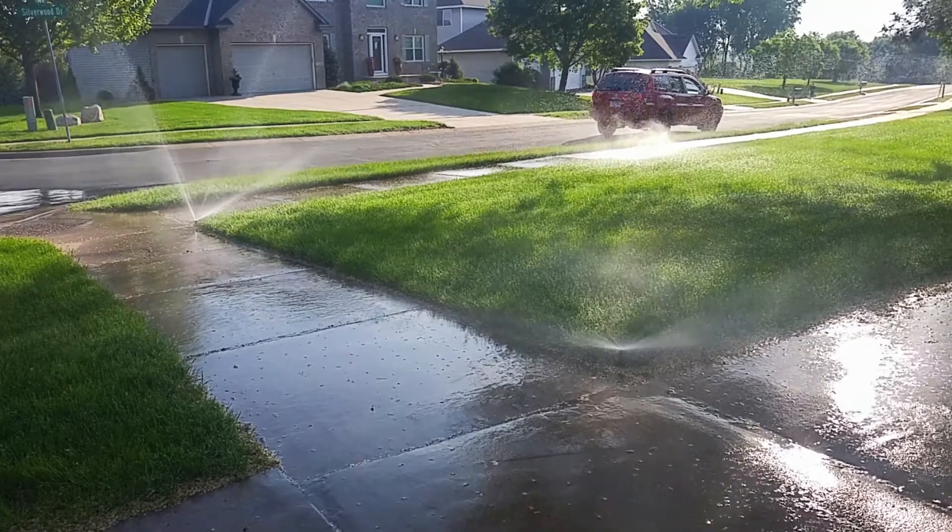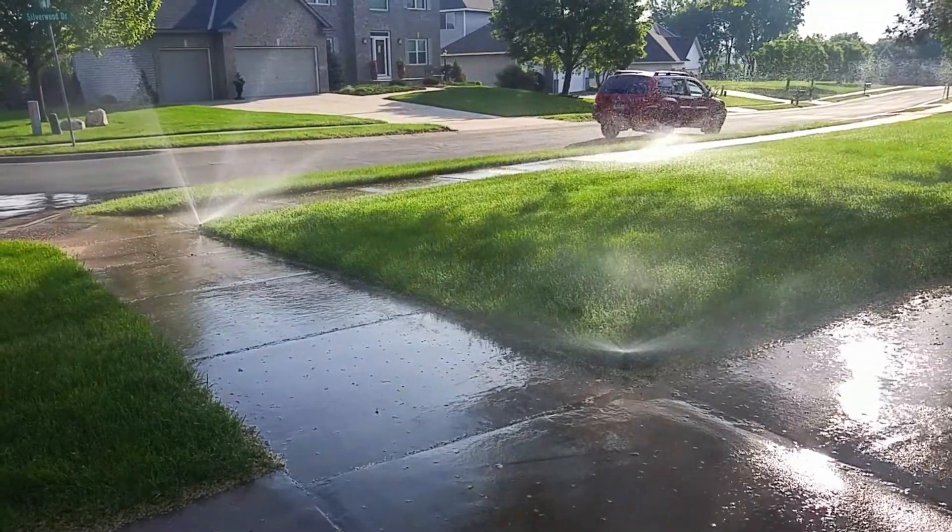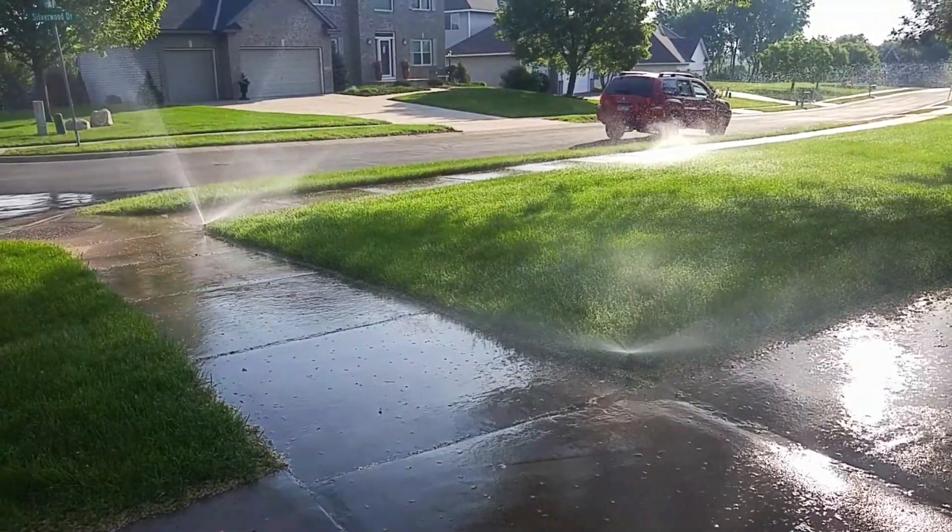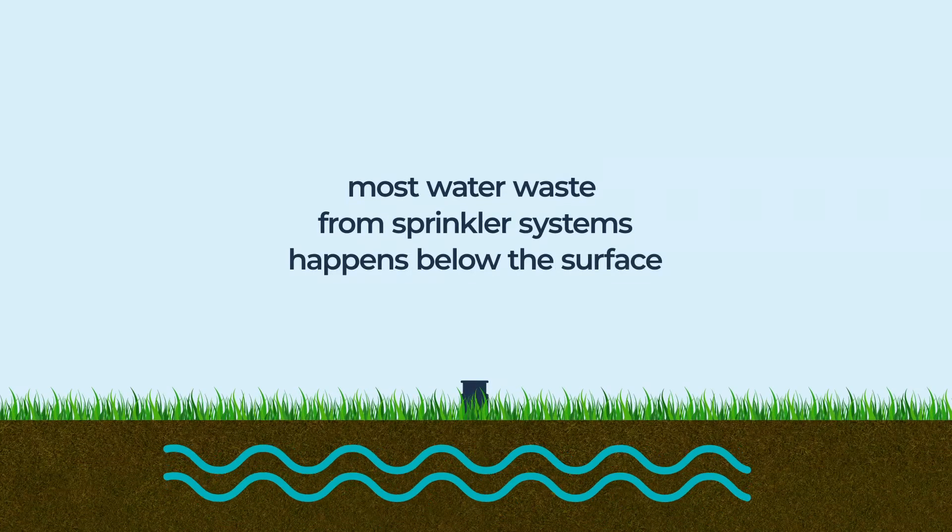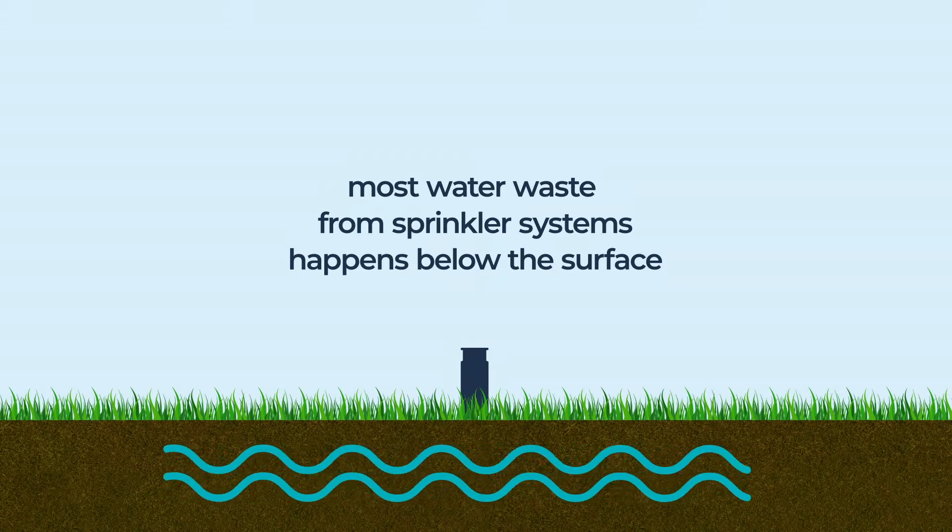Everyone knows about the waste you see from overspray coming from sprinkler systems—spraying onto the sidewalk, water running down the street—but most water waste from sprinkler systems happens below the surface.